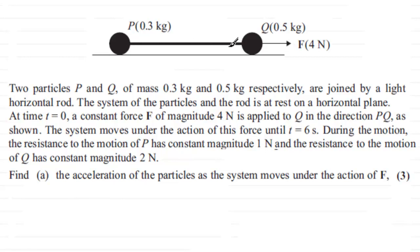The system of particles and the rod is at rest on a horizontal plane. At time t equals zero, a constant force F of magnitude 4 newtons is applied to Q in the direction of PQ.